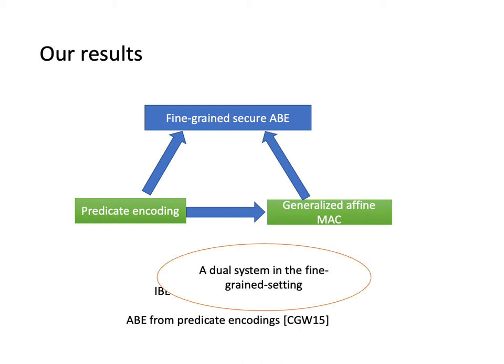Our construction essentially implements a dual-system in the fine-grained setting. The proof for the MAC and the general construction of our ABE switch functional user secret keys and functional ciphertexts to semi-functional ones respectively.